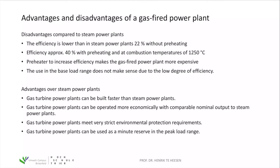On the other hand, advantages compared to steam power plants include: installation is rather fast since the system is not that complicated. Gas power plants can be operated economically at comparable output to steam power plants. Typically, gas power plants are mainly used for the peak load range. The key advantage is that gas turbines can produce electricity within seconds or even a minute at full power — a stark difference from steam power plants, which need at least minutes or even hours to increase their output.